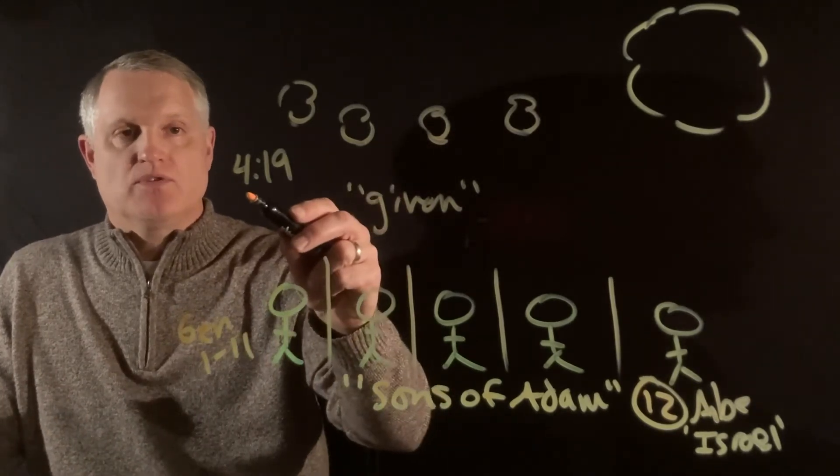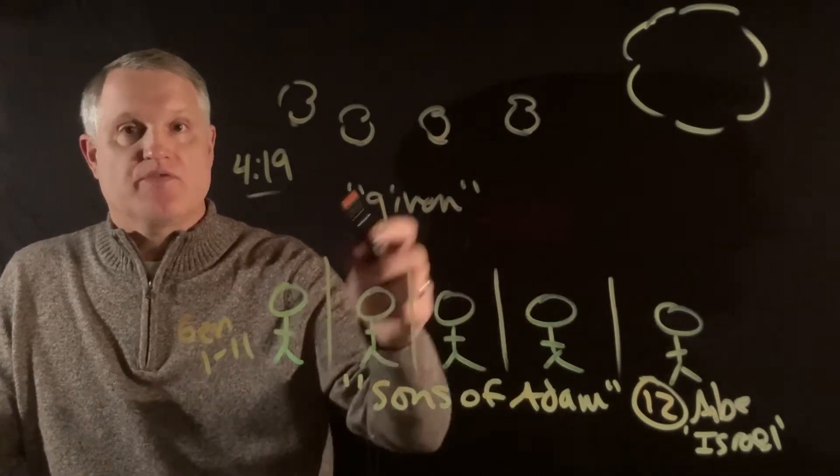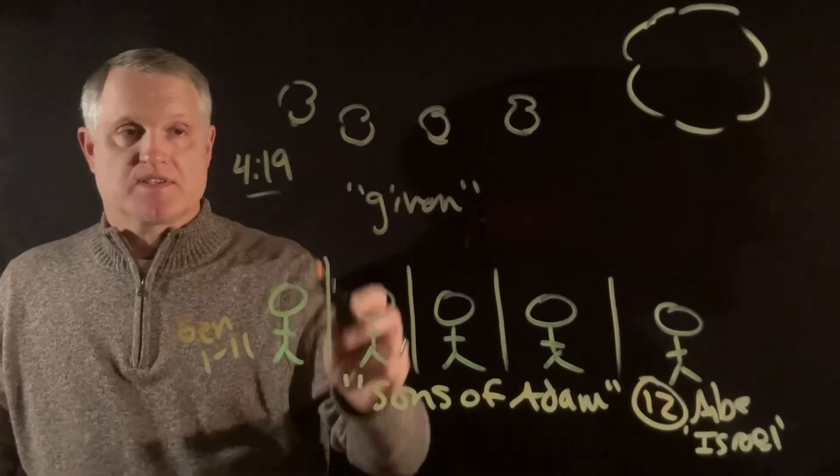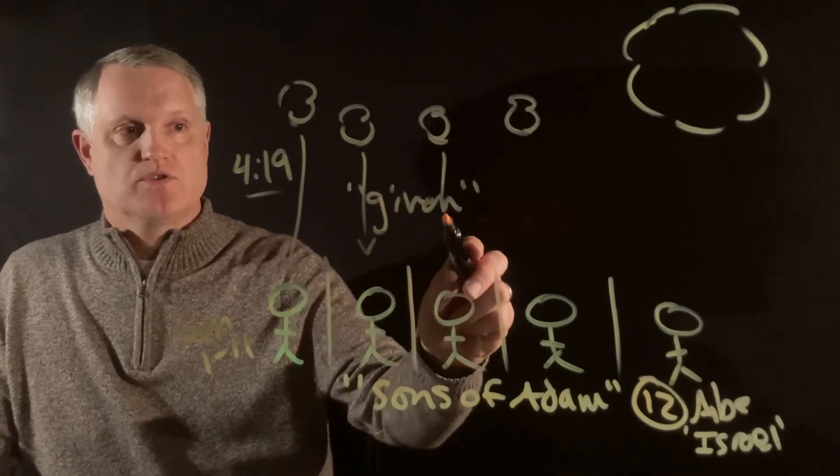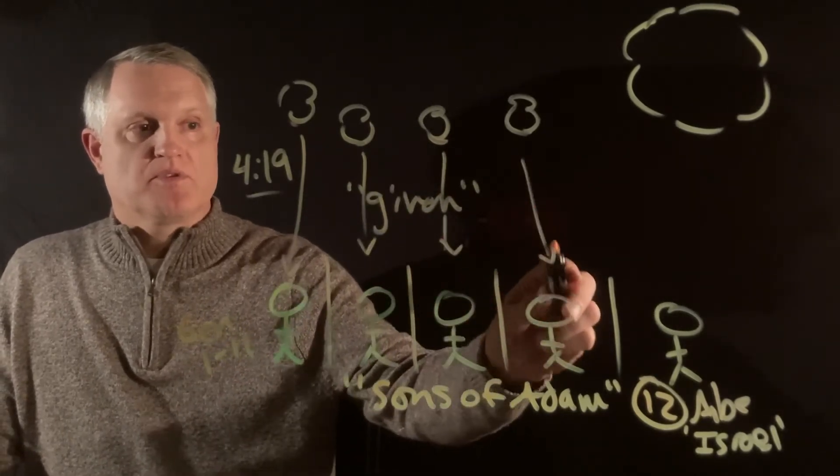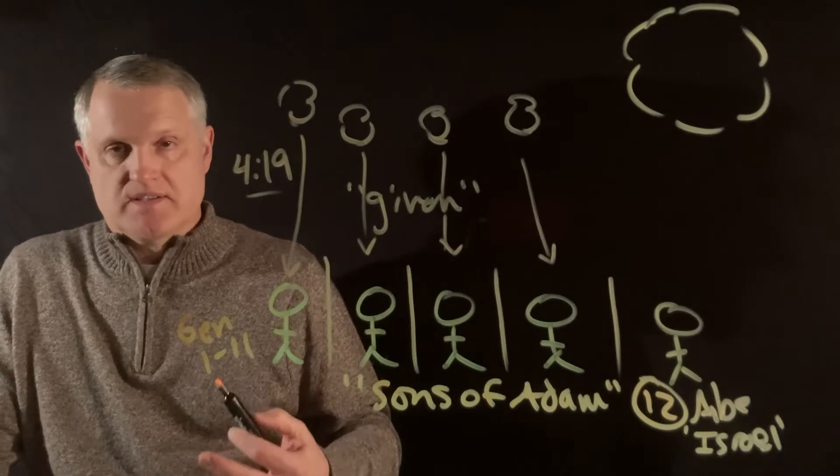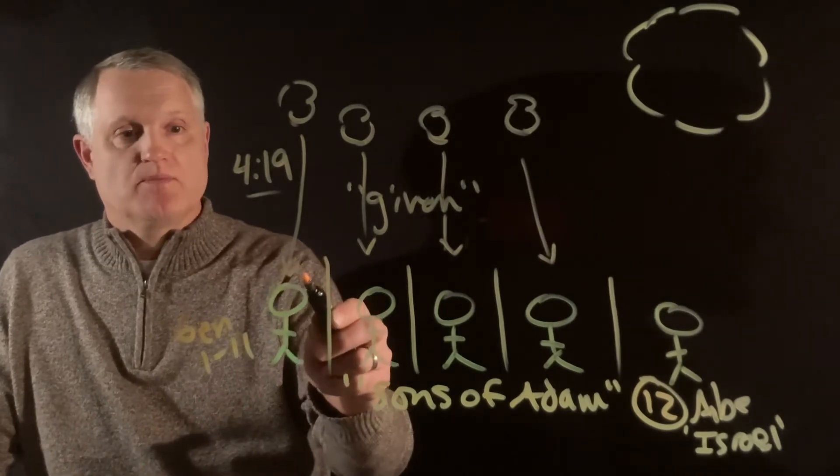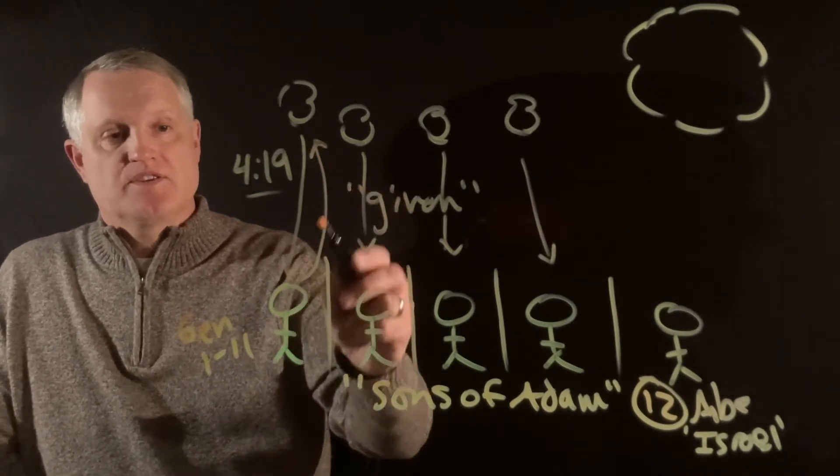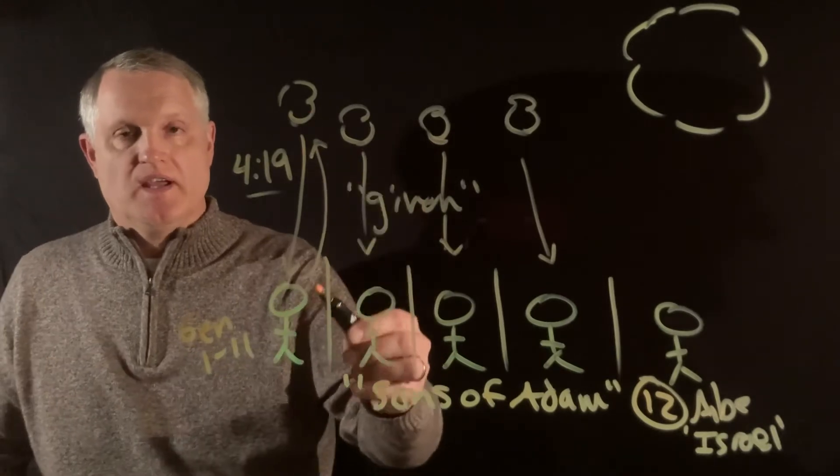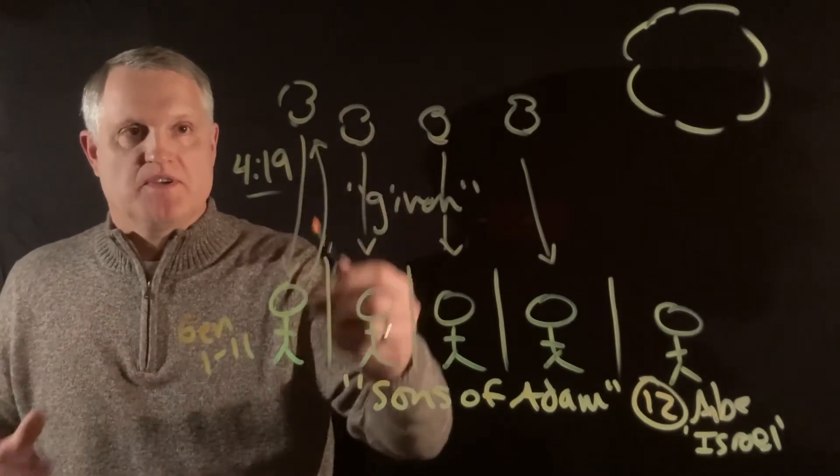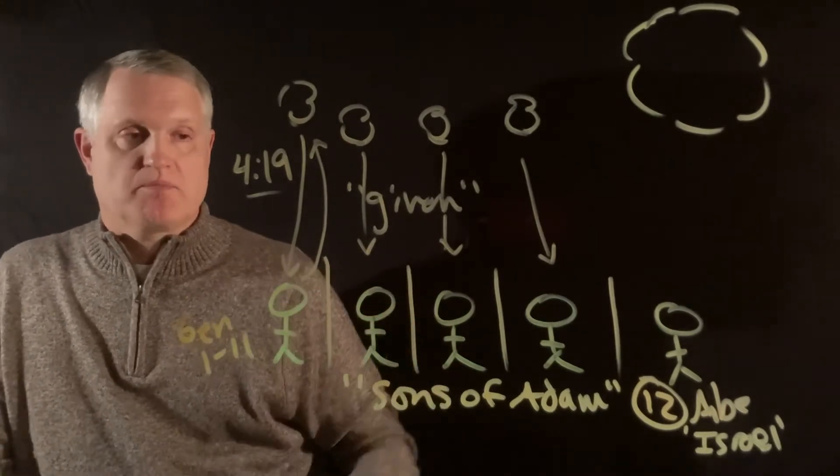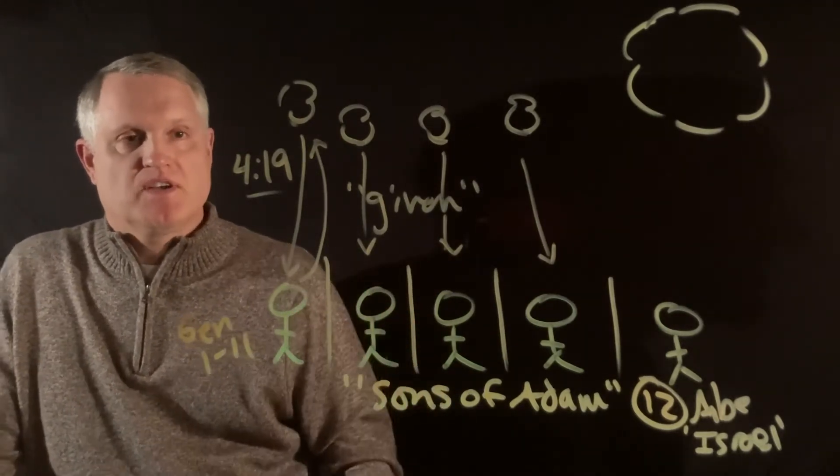So, what he's saying in Deuteronomy 4:19, filling out this story that goes back to the Babel incident, is that when that happened, these gods were, quote, given to the peoples of the world as an inheritance. It makes sense now that when someone worships a God, he's doing it because there is a deal, as it were, being brokered between the God and the nation or the person. That's what's mentioned in 4:19.